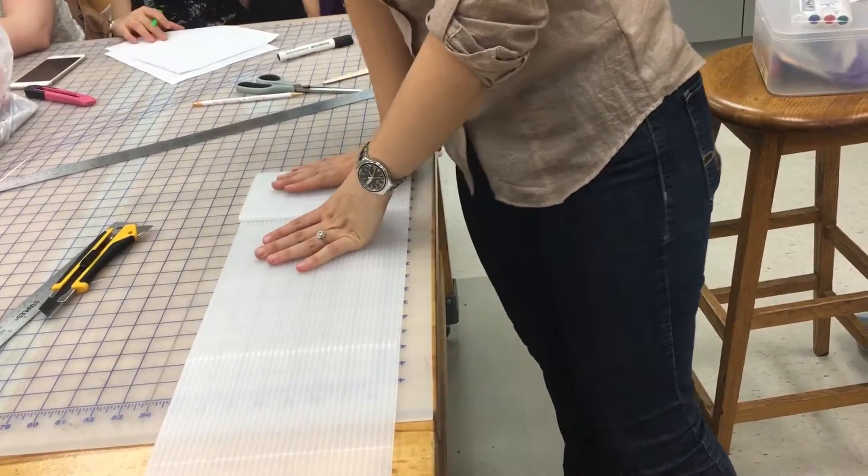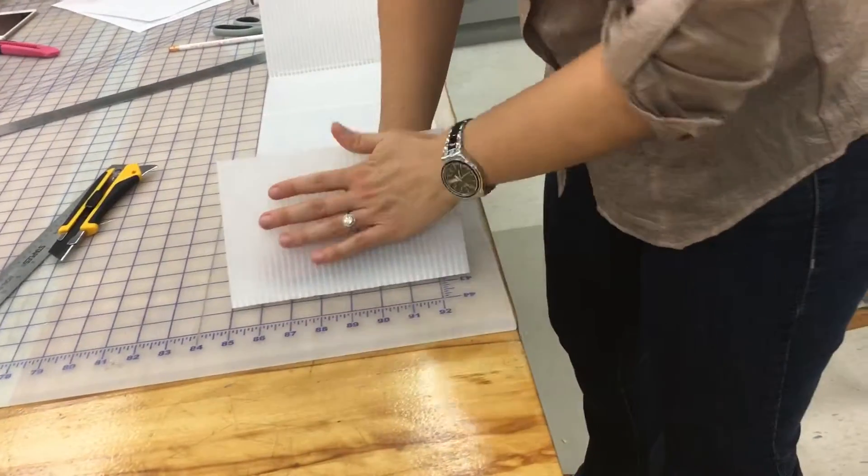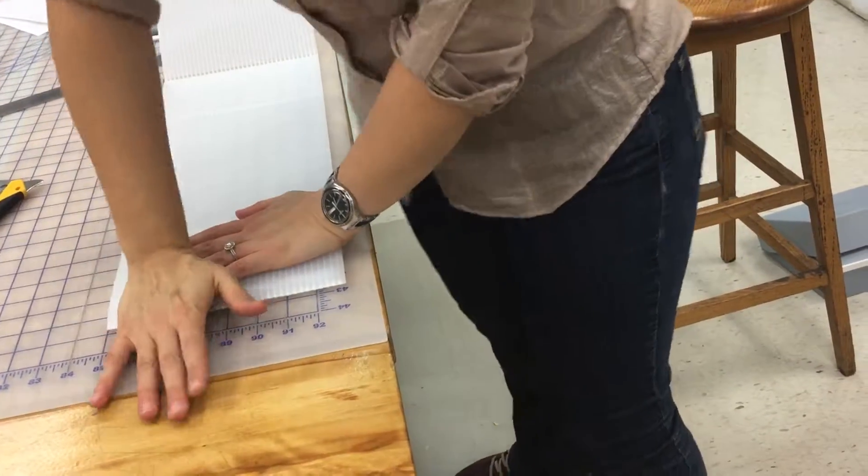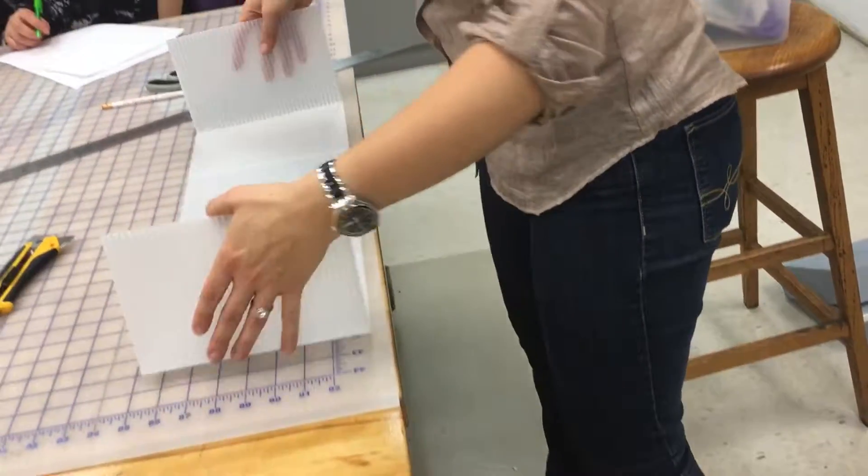If you notice that it's gone a little bit crooked, don't panic. It's fine. All you're going to do is trim where it starts to jut out because essentially you want it to fit nicely within your box.